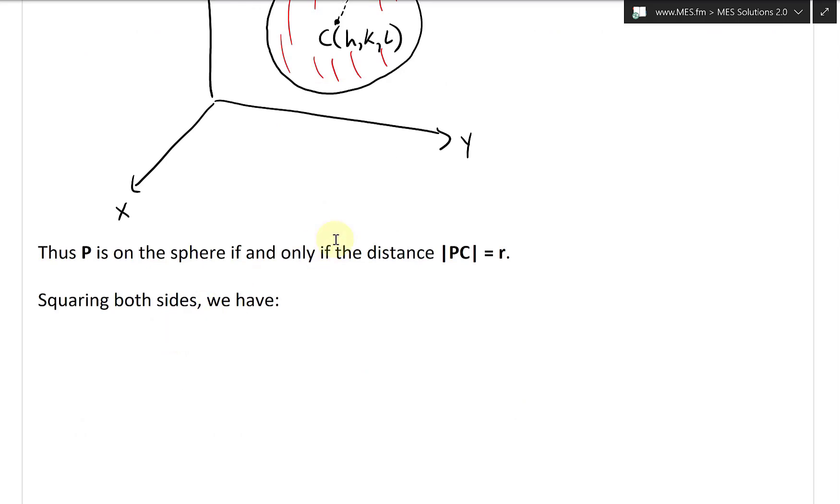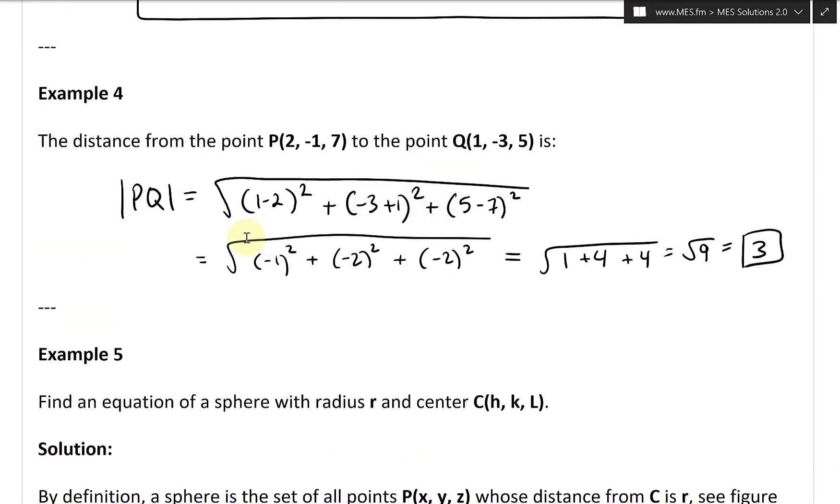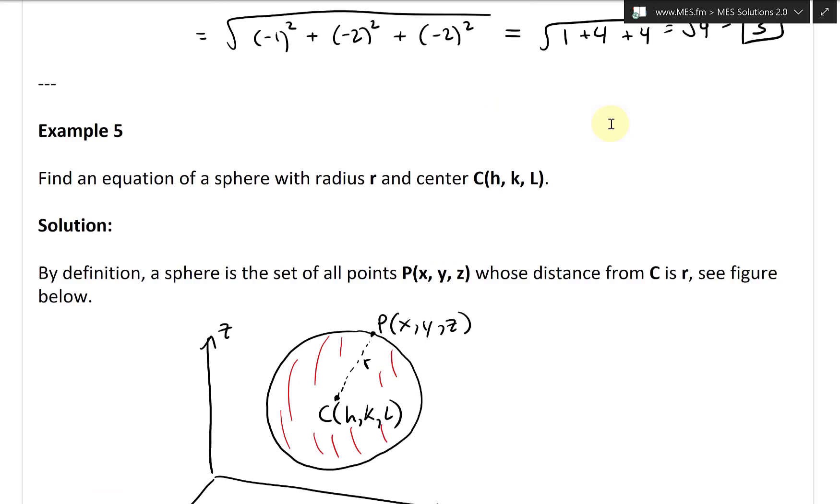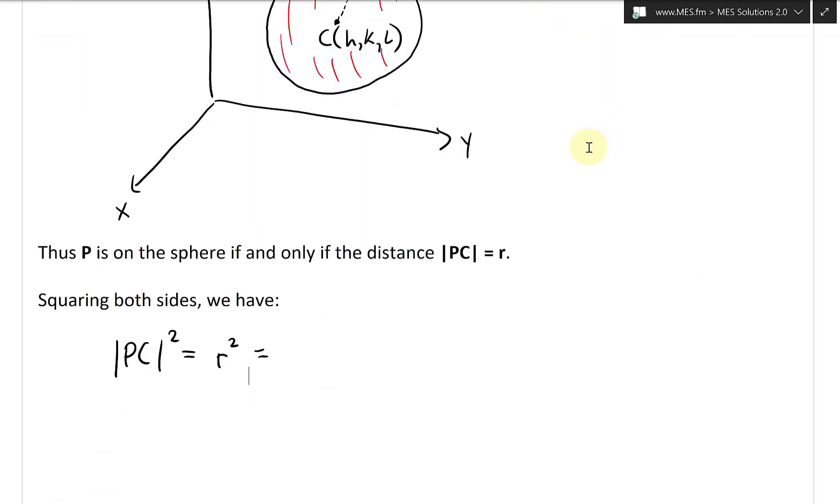And then if we square both sides, we have PC squared equals R squared. And this equals to, using the distance formula, we subtract the X's and the Y's and the Z's and square them, and because we're already squaring, we'll get rid of the square root.